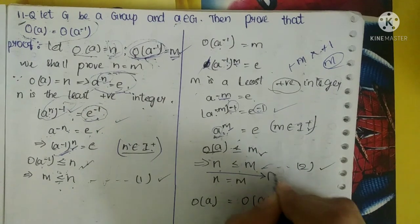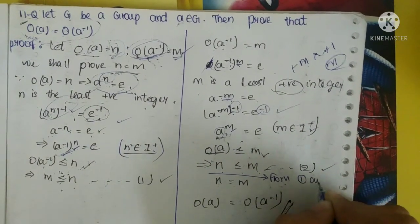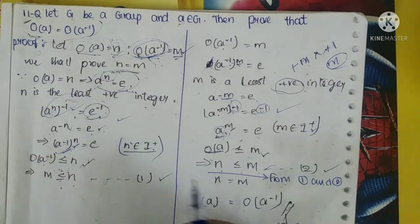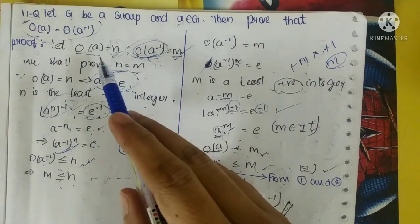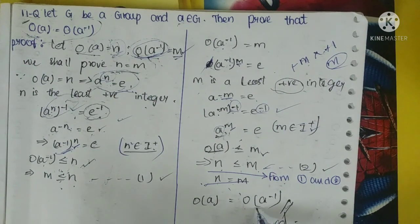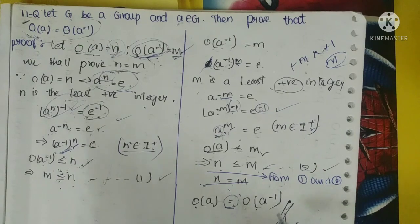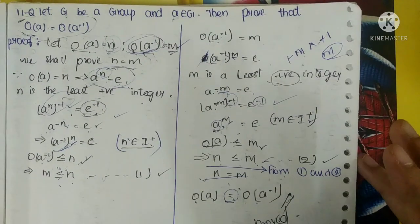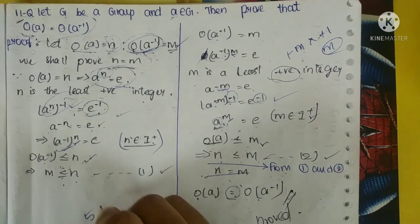From equation 1 and equation 2, N = M. Since N is O(A) and M is O(A⁻¹), substituting the real values: O(A) = O(A⁻¹). Hence proved. You should take a screenshot of this — this is a short question, four marks.